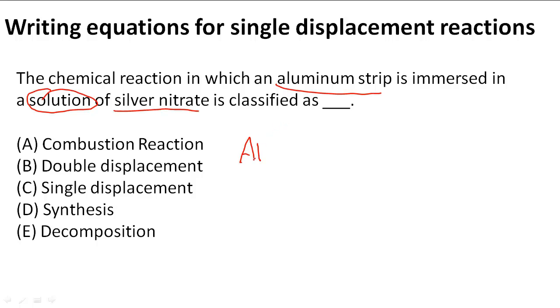Al solid, because it goes as a strip, is immersed into the solution of silver nitrate. Silver nitrate is written as AgNO3 aqueous because it's mixed with water. When they say solution, you should think aqueous.